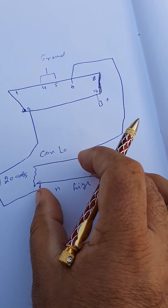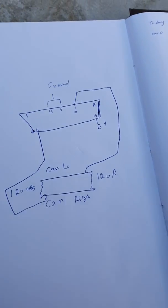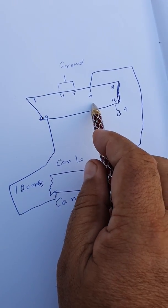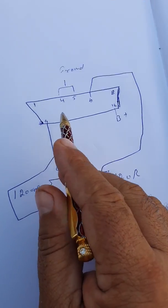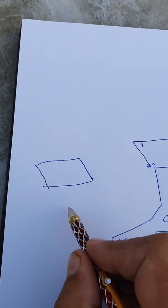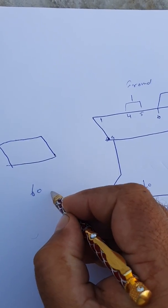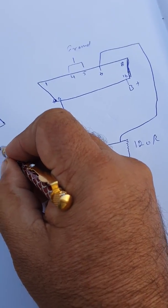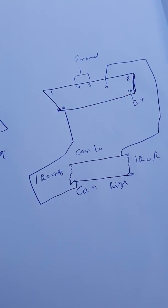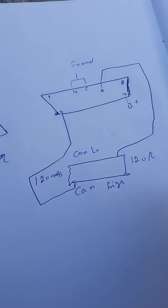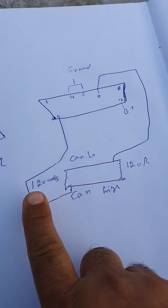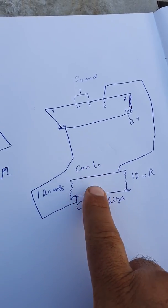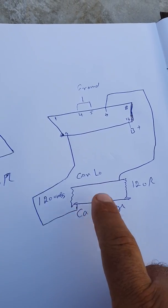This is the CAN high, CAN low diagram. When you check resistance between 9 and 6, we must have resistance of 60 ohms. If we have 60 ohm resistance, this is good resistance because there's a 120 ohm resistor here and 120 ohm resistor here. If we check with one connector here and one multimeter, we can read 60 ohms.